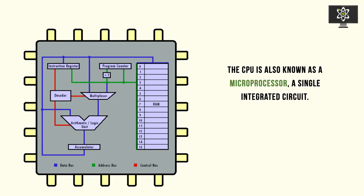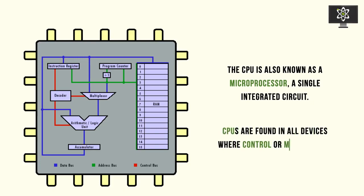The CPU is also known as a microprocessor nowadays. In the past, CPUs were made of many different integrated circuits connected within a circuit board, but now it's a single integrated circuit — that's why it's called a microprocessor, all-in-one. CPUs are found in all devices, mainly for control and monitoring purposes: control meaning you can dictate the output of another device, and monitoring meaning to gather input.